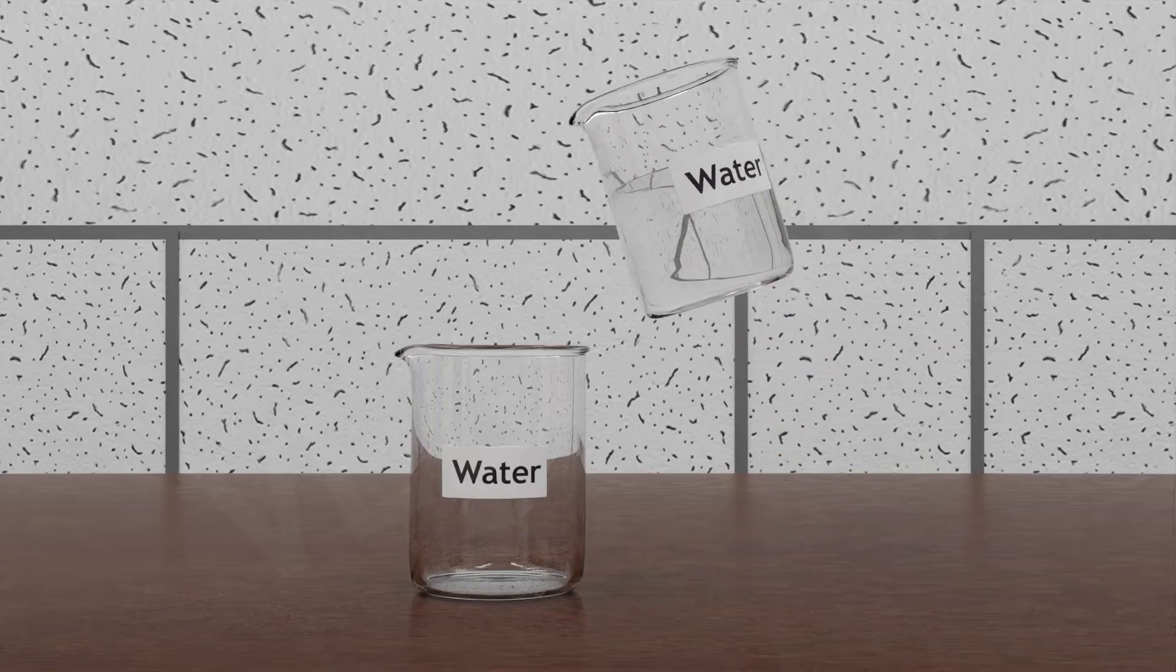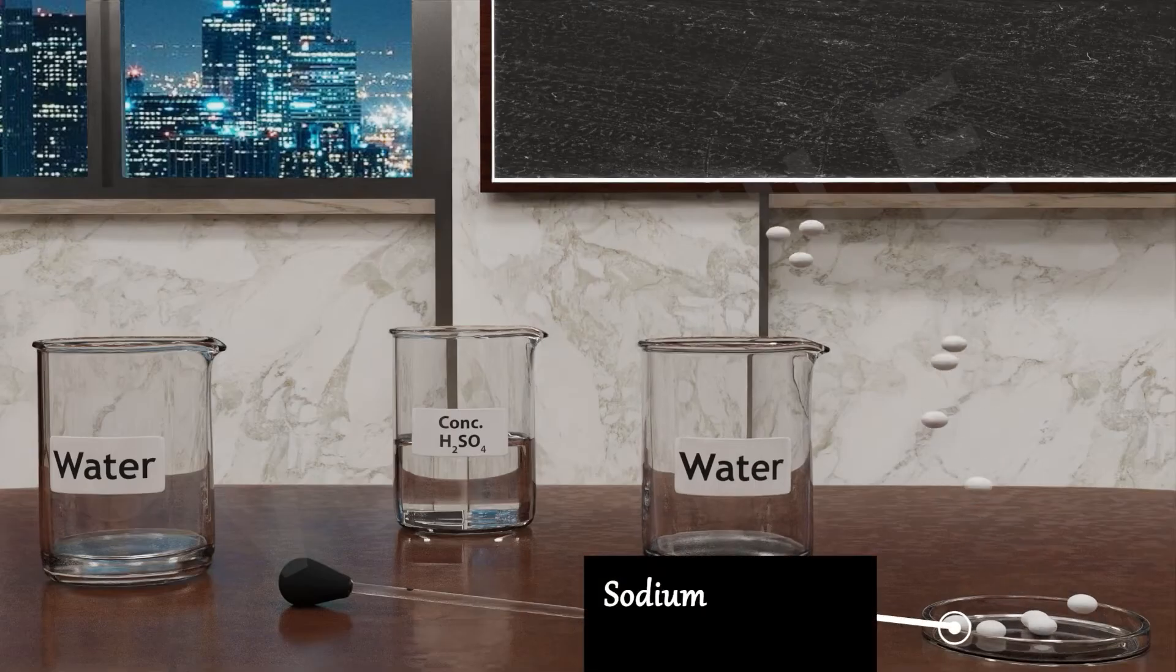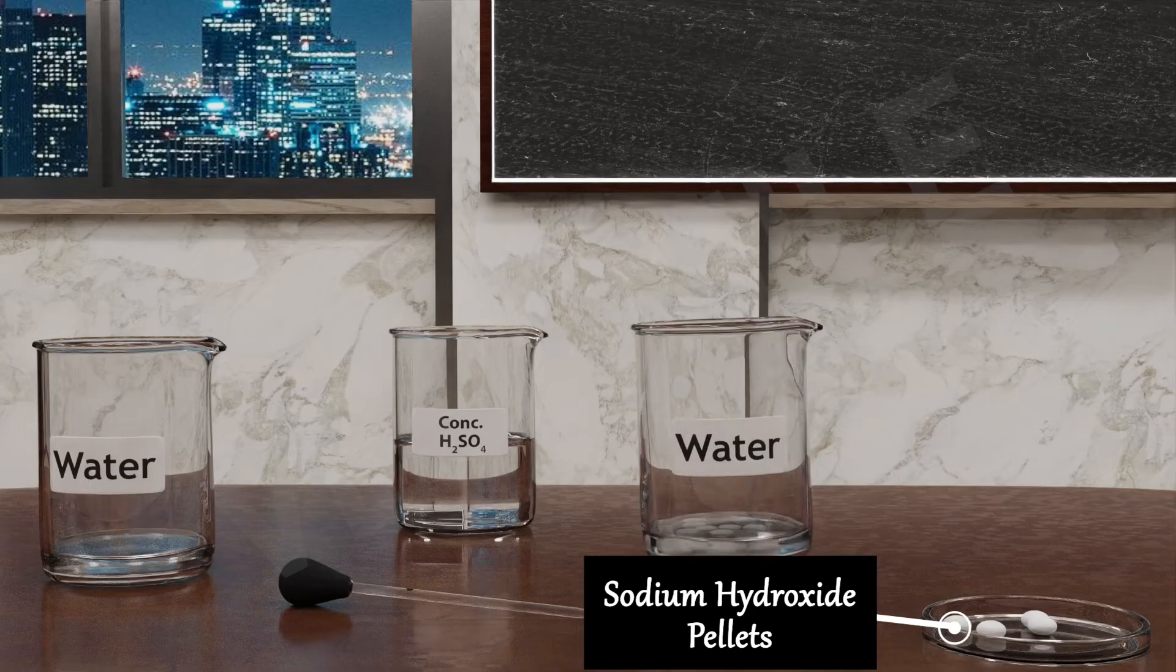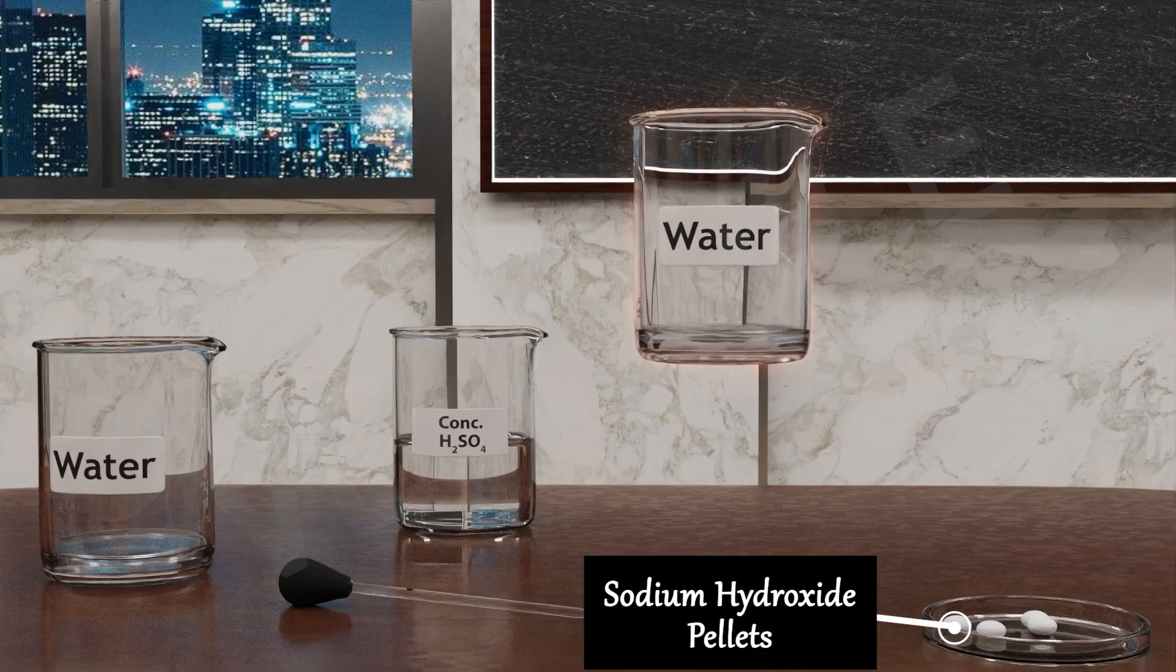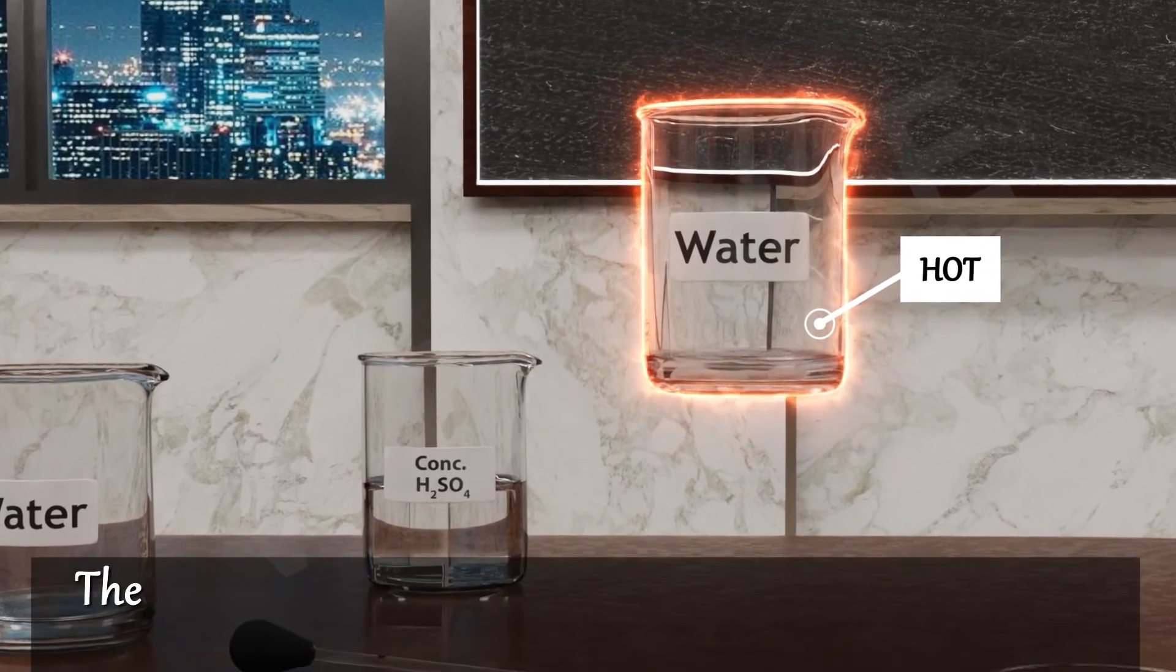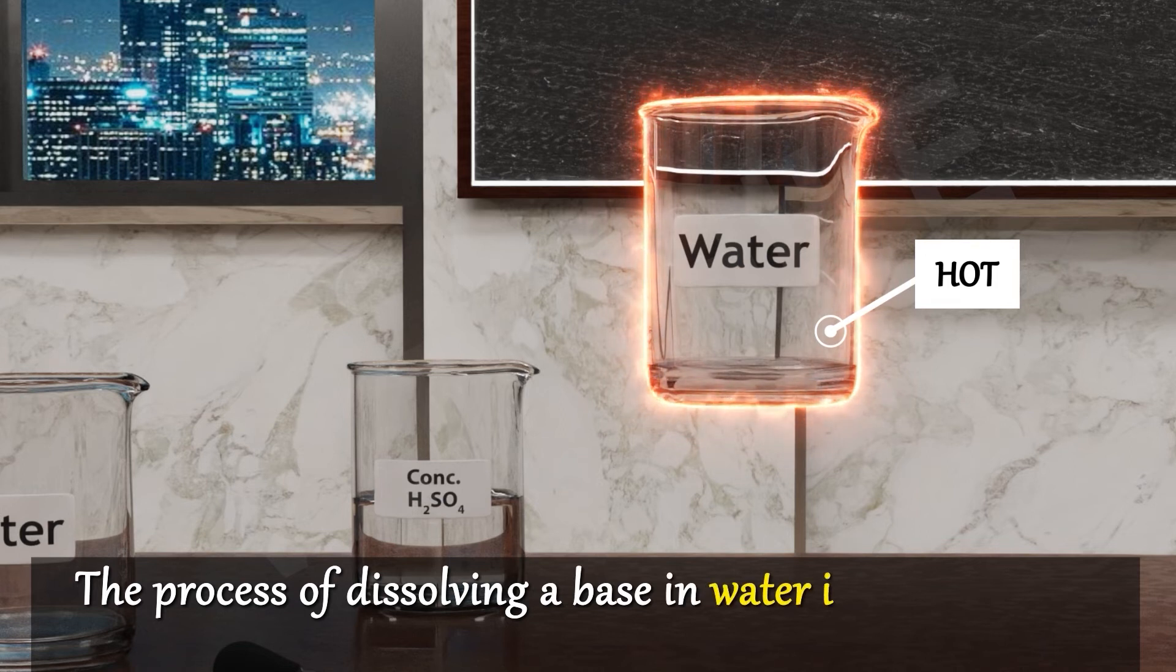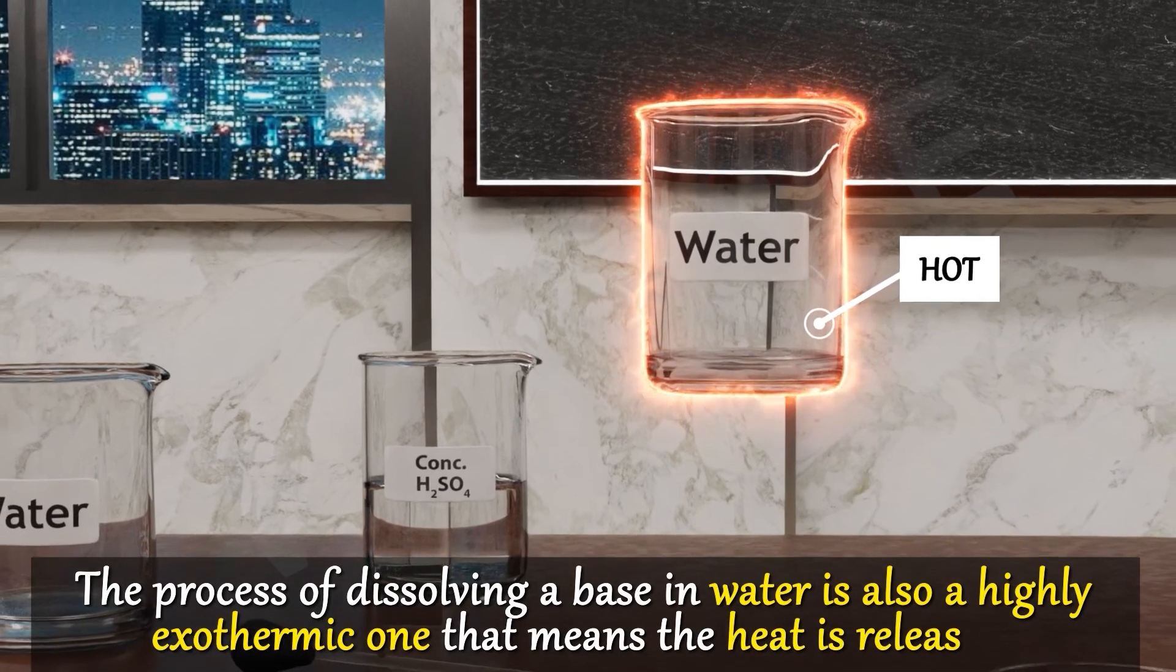So take again 10ml water in a beaker, add few sodium hydroxide pellets in it, swirl the beaker slowly. Now touch the base of beaker. Again it's become hot, means the process of dissolving a base in water is also a highly exothermic one, that means the heat is released.